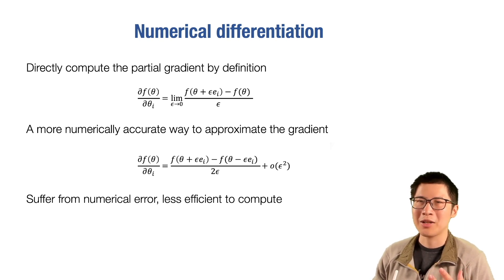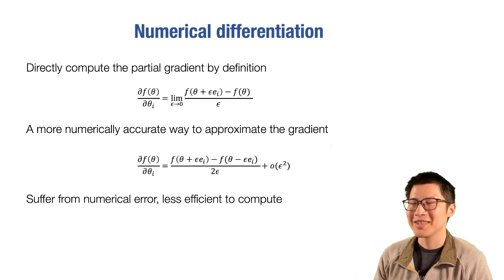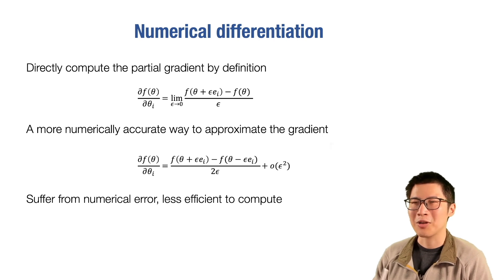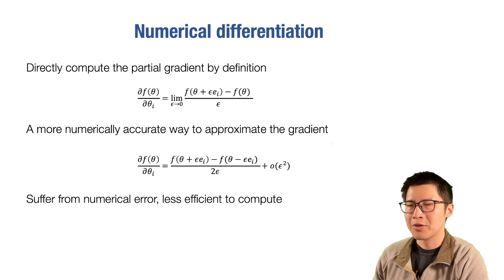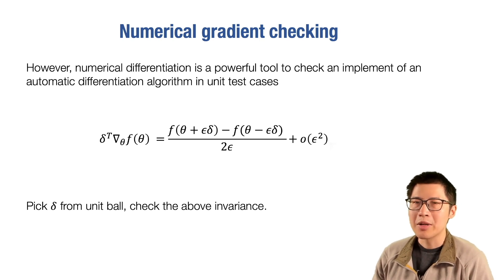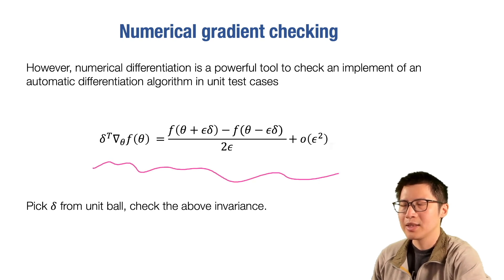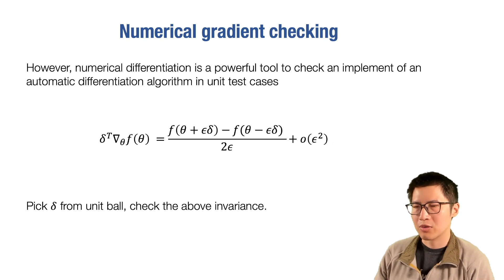However, this formula is still widely used in practice for another purpose. It's really straightforward to compute and easy to get right. While if you implement an automatic differentiation method, you want to verify whether the implementation is correct. So numerical differentiation is commonly used to do gradient checking — to check whether our automatic differentiation implementation gives the correct result. In practice, numerical gradient computation can still be costly if we have many input parameters.